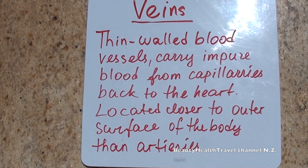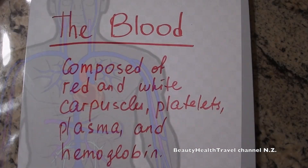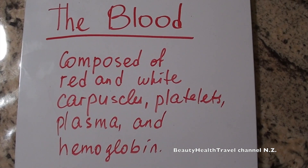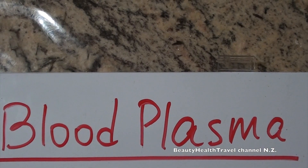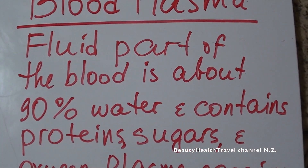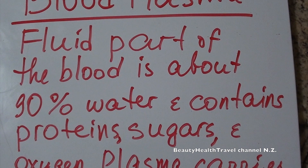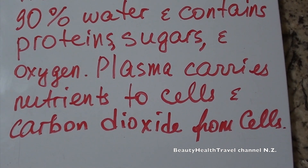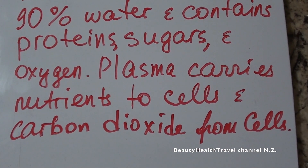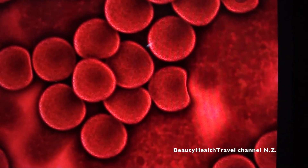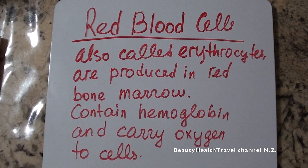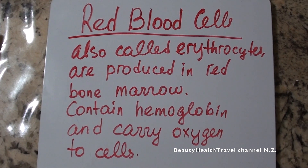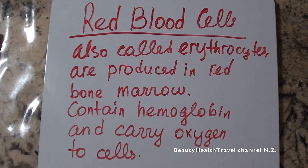The blood is composed of red and white blood cells, platelets, plasma, and hemoglobin. Blood plasma is the fluid part of the blood — about 90% water — and contains proteins, sugars, and oxygen. Plasma carries nutrients to cells and carbon dioxide from cells. Red blood cells, also called erythrocytes, are produced in red bone marrow, contain hemoglobin, and carry oxygen to cells.